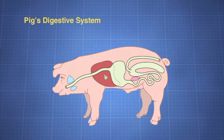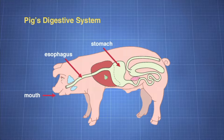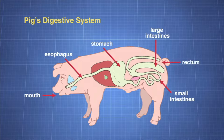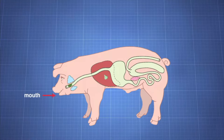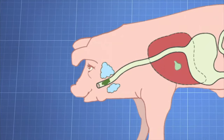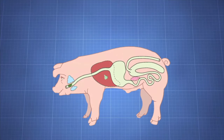The main parts of a pig's digestive system include the mouth, esophagus, stomach, small intestines, large intestines, and rectum. Food enters the digestive tract through the mouth, where the mechanical breakdown of food begins. Teeth chew and grind food into smaller particles. The saliva moistens and softens the food particles while an enzyme starts the digestion of starch. Saliva also contains digestive enzymes. The tongue pushes food toward the esophagus, which carries the food to the stomach.